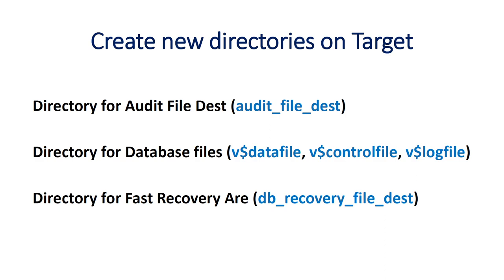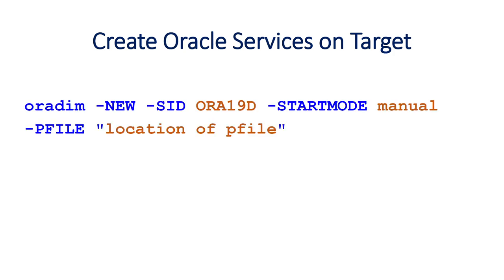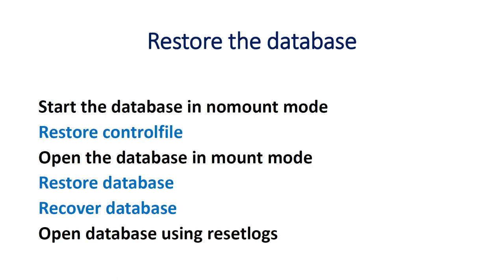Once we have transferred the files, we will be creating some directories such as the audit file destination, the database file locations for data files, control files, redo logs, and the FRA. If we have configured FRA, we will create the FRA location. Once we have all of these directories, we will create a new Oracle service using the oradim command, specifying the SID name, startup mode, and the P file location. Then we will restore the database: start the database in nomount mode, restore the control file, start the database in mount mode, restore the database, recover the database, and open the database using resetlogs mode.